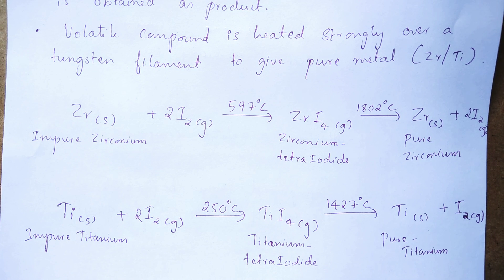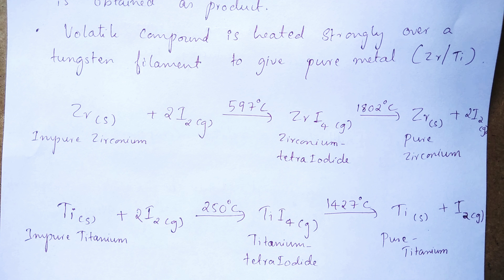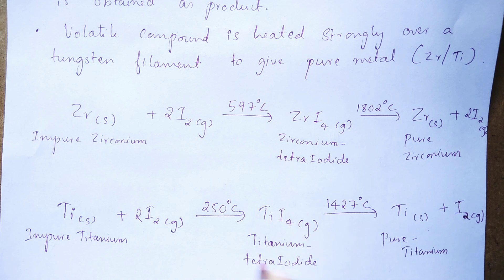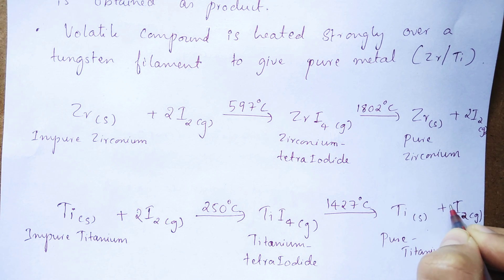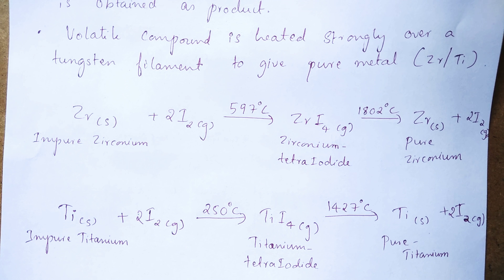The volatile compound titanium tetra iodide is then heated strongly at 1427 degree Celsius, at which point it decomposes producing pure titanium solid, with iodine gas as the byproduct. Balancing the equation: there are four iodines on one side and two on the other, so put 2 in front of iodine.